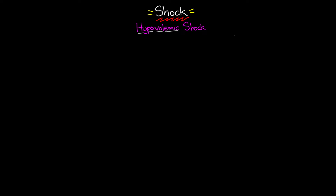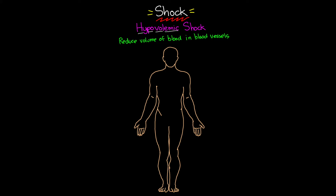Basically what we're saying is that we have a reduced volume of blood in your blood vessels. In the case of hypovolemic shock, there are multiple causes or reasons you could have a reduced volume of blood. The first and probably most common cause would be external blood loss, which is almost exclusively caused by some sort of trauma or injury, ultimately leading to an acute hemorrhage and thus hypovolemic shock.